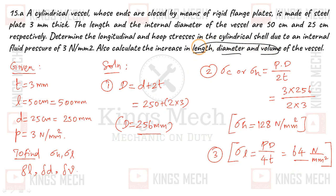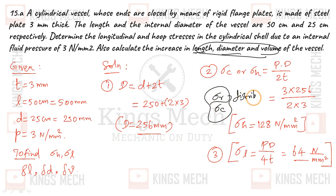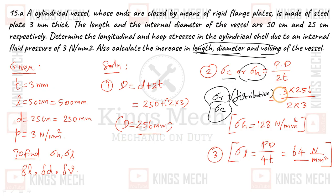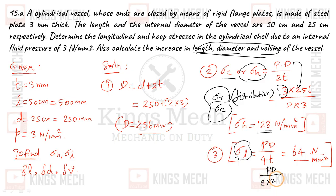Now we calculate the stresses. The circumferential hoop stress σ_h = PD / 2t. With P = 3, D = 256 mm, and 2t = 6: σ_h = (3 × 256) / (2 × 3) = 128 N/mm². The longitudinal stress σ_L = PD / 4t = σ_h / 2 = 128 / 2 = 64 N/mm².